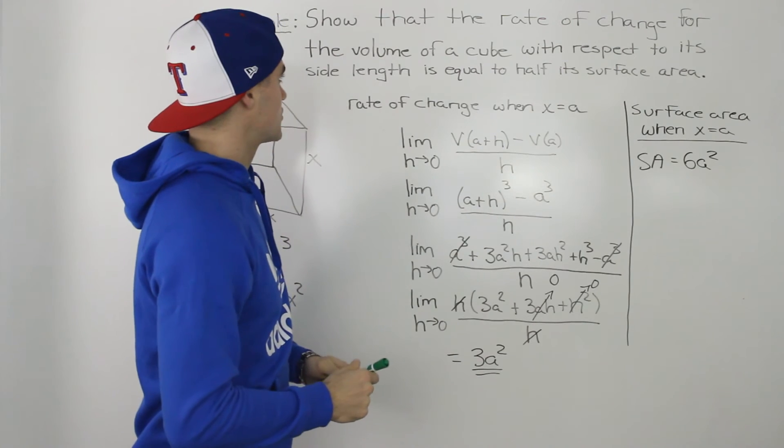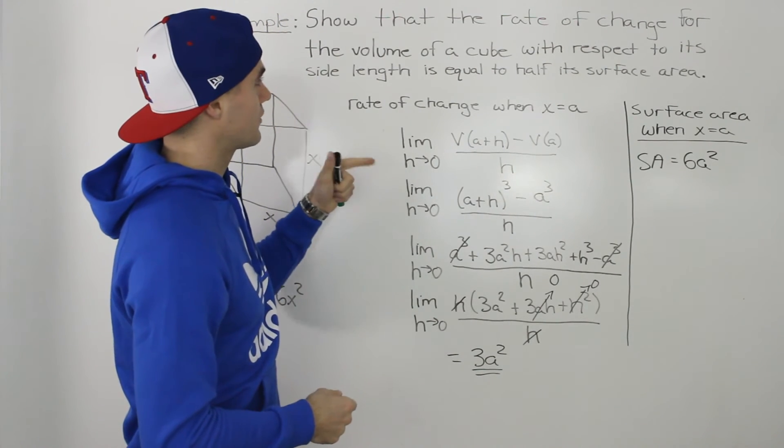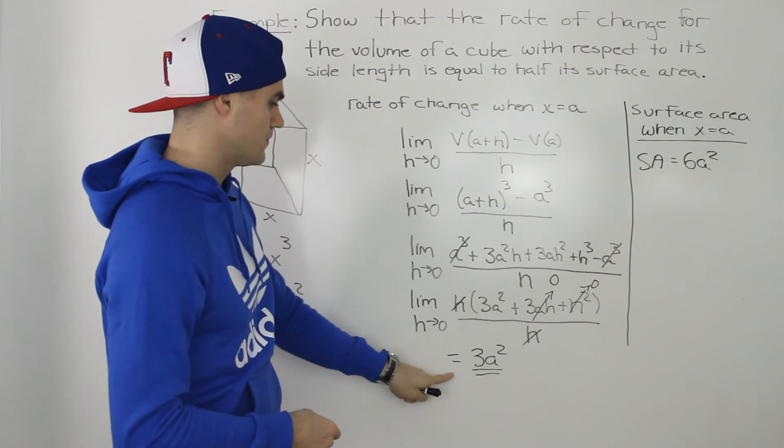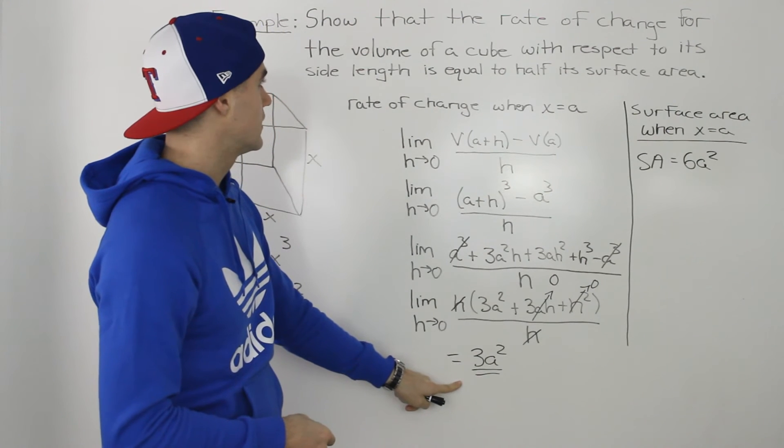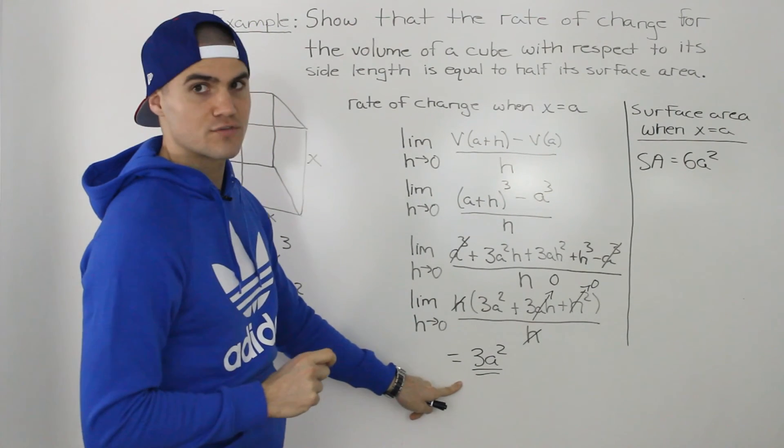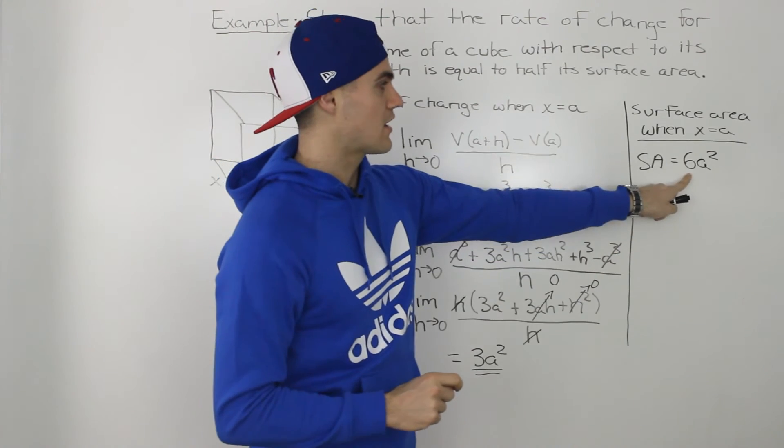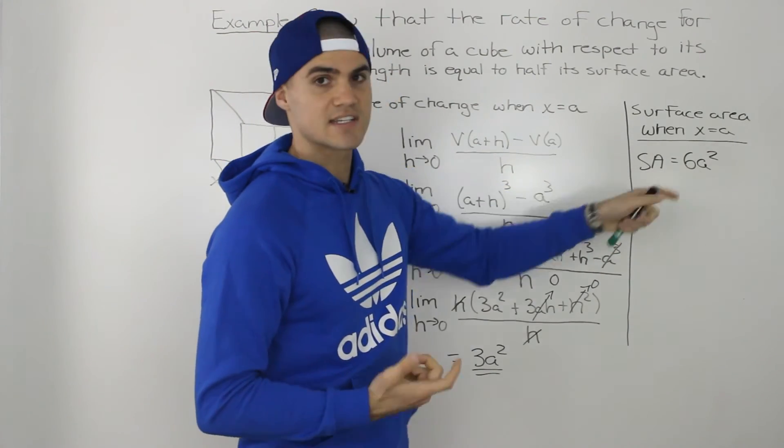Now let's go back to our original question. What are we showing? We're showing that the rate of change for the volume of a cube which is 3a squared is equal to half its surface area. Well its surface area is equal to 6a squared.